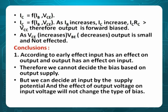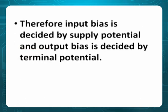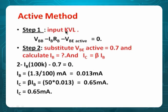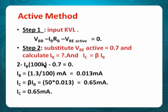All this is because input is forward biased. Taking the active method: assume input is forward, calculate VCB. If VCB is positive, this is active region. If VCB is negative, the output is forward biased, so it is saturation. Now, applying input KVL: VBB minus IB·RB minus VBE(active) = 0. Substitute VBE = 0.7 and solve for IB. IB comes to 0.013 milliampere.